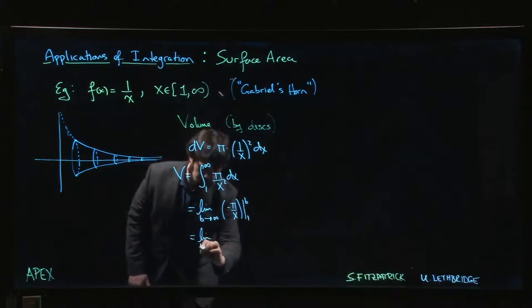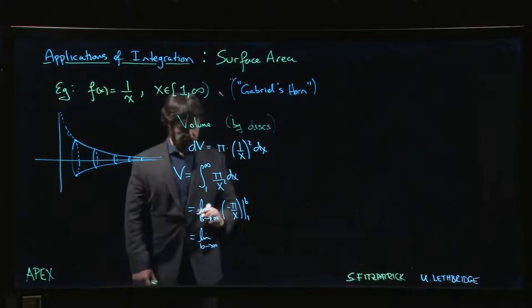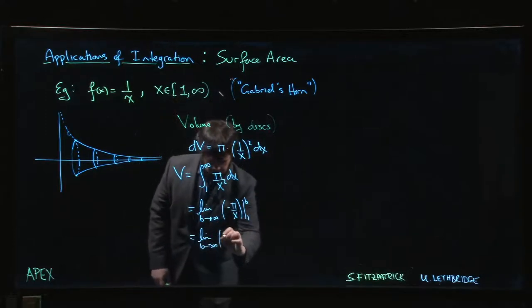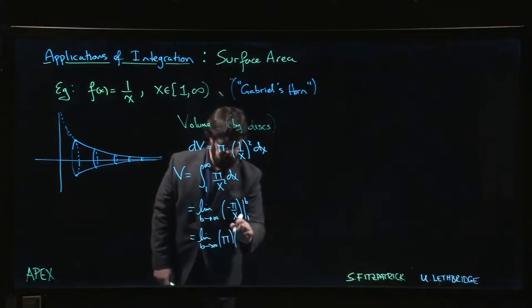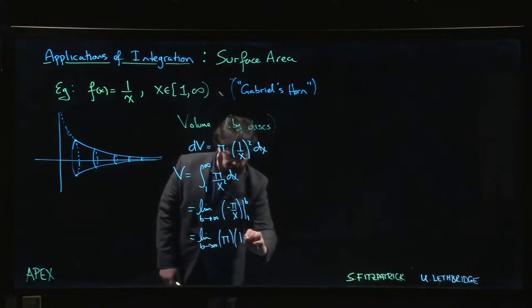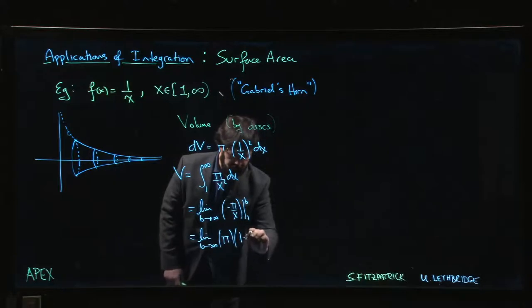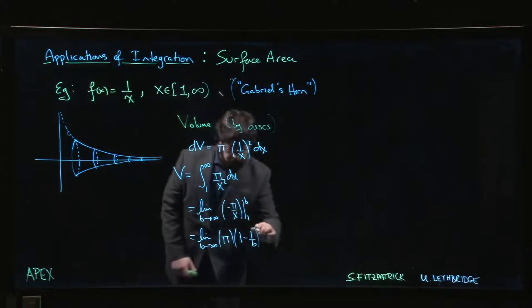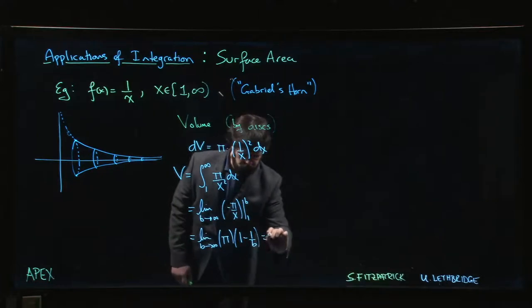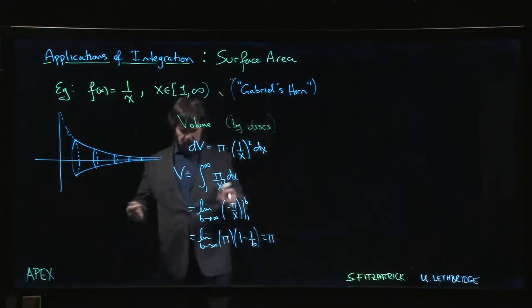So we get the limit b going to infinity of π times, if we account for the minus sign, it's going to look like this: 1 minus 1 over b. As b goes to infinity, we get π.